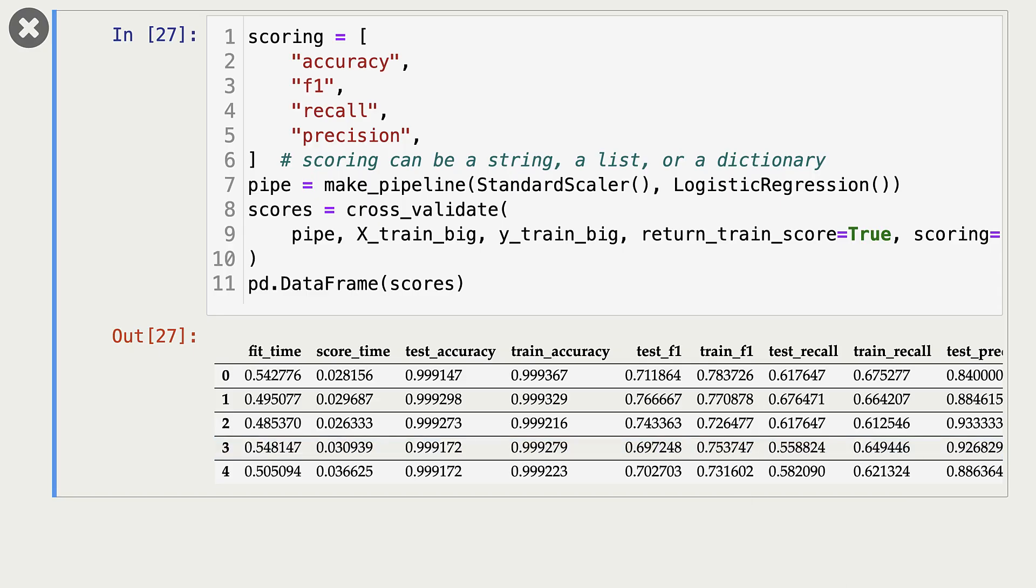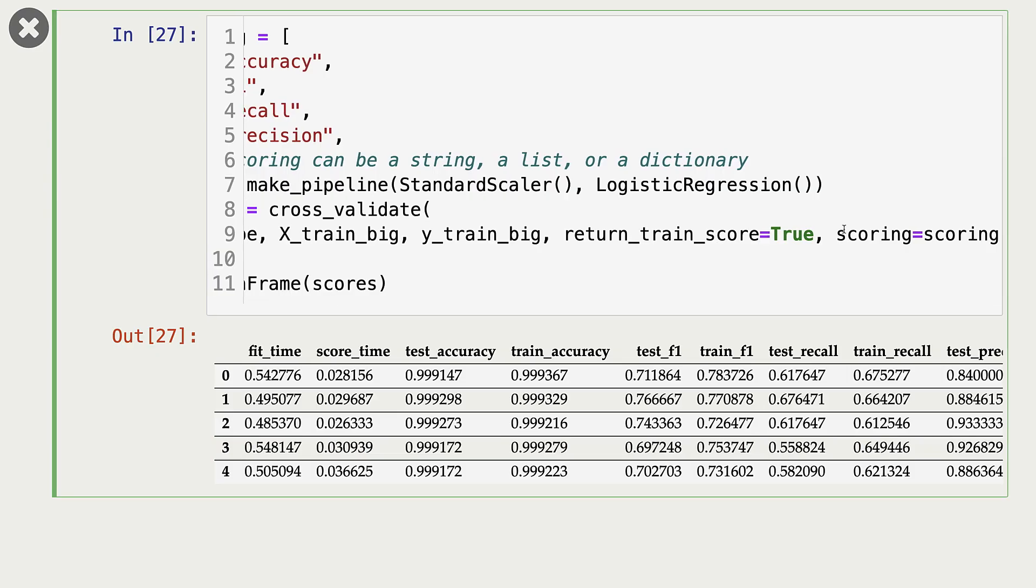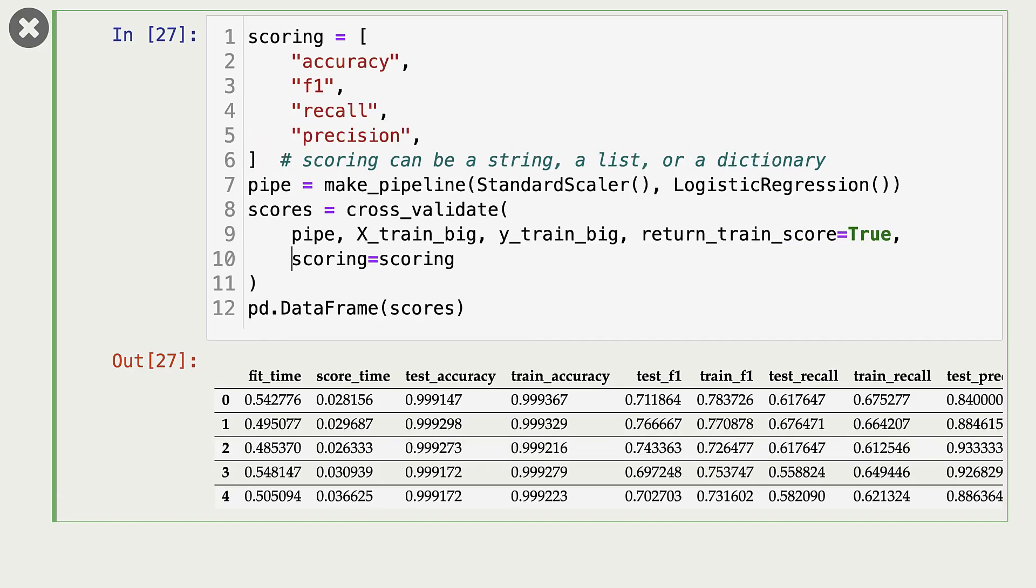The scoring parameter can take a string or a list, as we are doing here, or it can also take a dictionary. And you can also define your own scoring method. If you have a specific application and your own scoring method, you can define your scoring function and pass it to cross-validate. I'll see you next time.